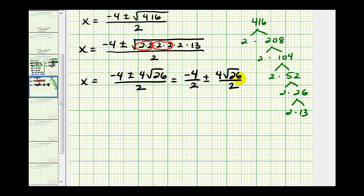So we have x equals negative two, plus or minus, this will be two square root 26.